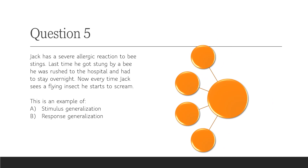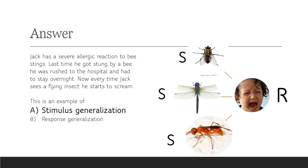Question 5: Jack has a severe allergic reaction to bee stings. Last time he got stung by a bee, he was rushed to the hospital and had to stay overnight. Now, every time Jack sees flying insects, he starts to scream. Is that an example of stimulus generalization or response generalization? The answer is stimulus generalization. We have only one response — Jack screaming — and different stimuli: different types of flying insects.